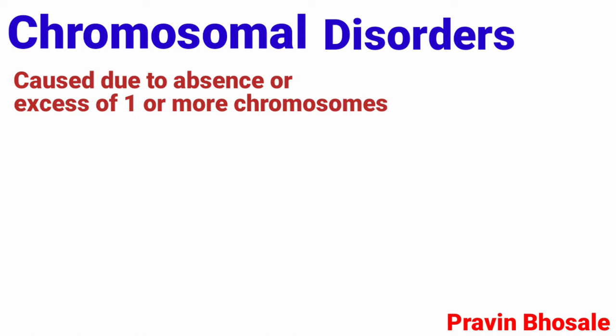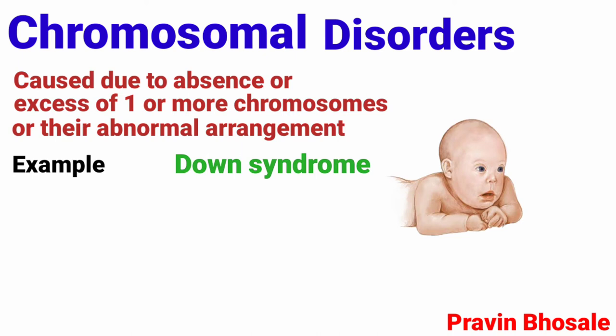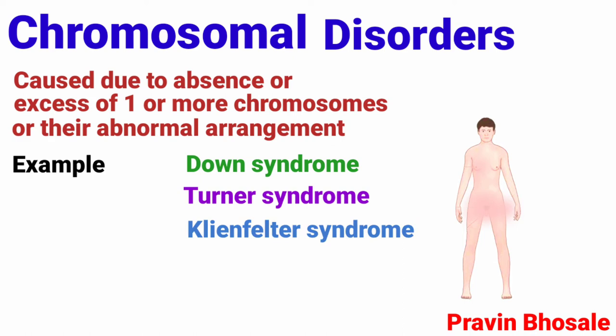Chromosomal disorders occur due to absence or excess of one or more chromosomes, or their abnormal arrangement. Examples include Down's syndrome, Turner's syndrome, and Klinefelter's syndrome.